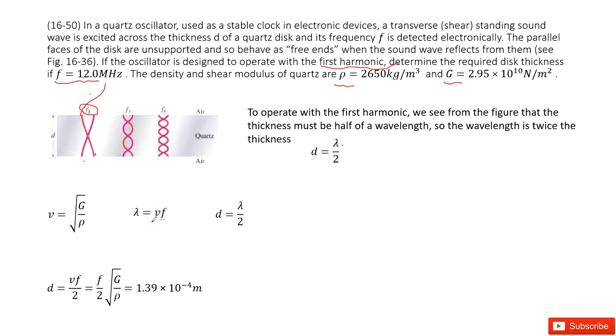The wave speed is determined by the function we learned in previous chapters: square root of G divided by rho. Therefore, we can input v in the lambda function and input lambda in the d function. Finally, we can write the function for d and input all the known quantities to get the answer. Thank you.